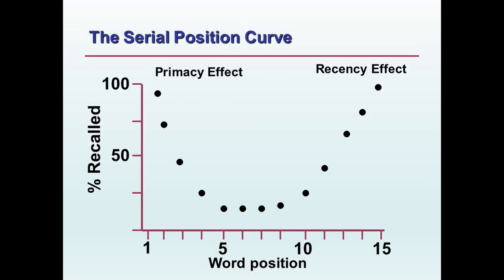So this is the serial position curve. We're looking at the percentage of people who recalled each word on the vertical axis, and the position of the word in the list on the horizontal axis. The list was: bird, house, tree, banana, comb, store, telephone, box, comet, carpet, tornado, biscuit, picture, bookcase, lampshade. Usually a lot of people remember the first word in the list.